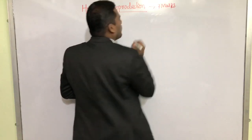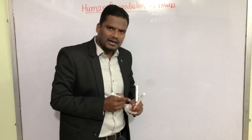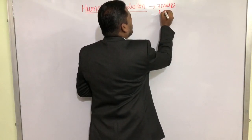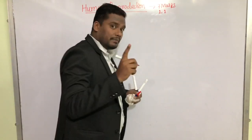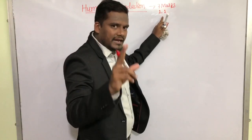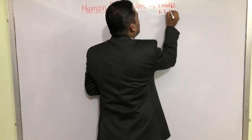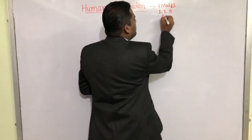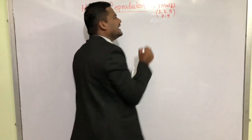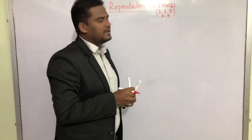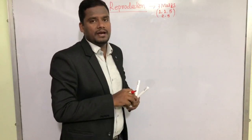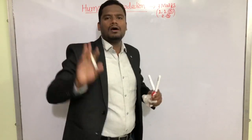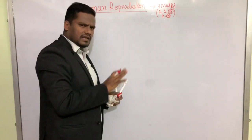From this chapter in your board examination, total seven mark questions will be there. The pattern of these seven marks is divided as follows: one mark one question, sometimes again one mark one question — that means two questions carrying one mark — and there will be a five mark question. Sometimes it may be two marks one question and five marks. In both cases, a five marks question will definitely be there from this chapter.